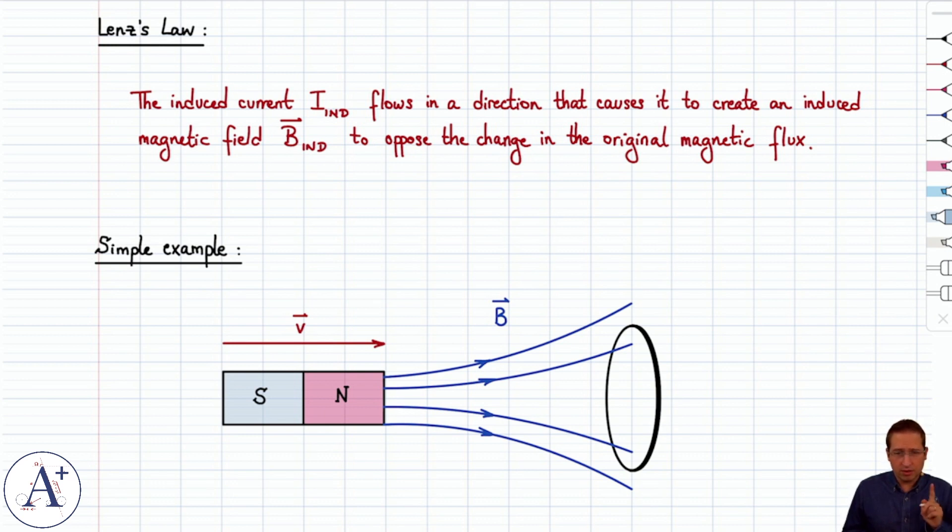Once again, what matters is the change in magnetic flux. That means we have to be able to determine if the magnetic flux in the given problem stays the same, increases, or decreases. Let's look at a simple example to illustrate this statement. It's a bit of a strange statement the first time you hear it.